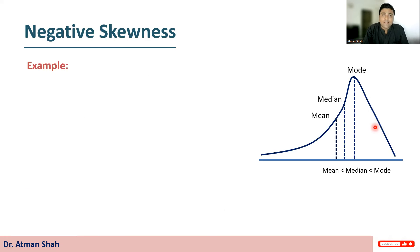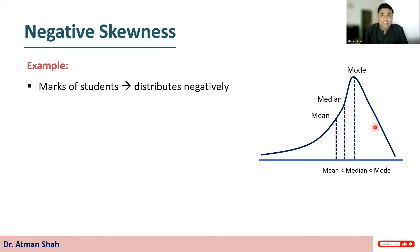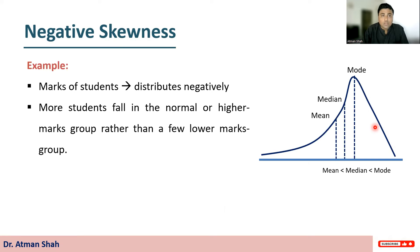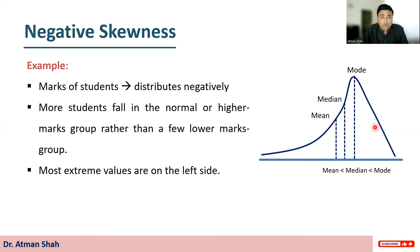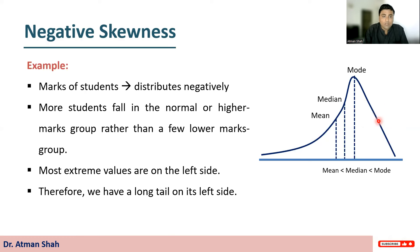Let's understand negative skewness with the same example. Suppose marks of students follow a negatively skewed distribution. More students fall in the normal or higher marks group rather than a few in the lower marks group. Most extreme values are on the left side, and most of the values lie to the right of the mean. Therefore we have a long tail on the left side. In this case, mean is less than median.